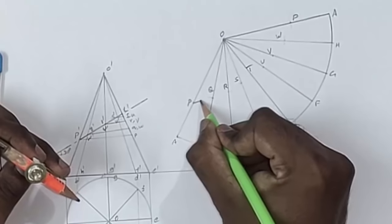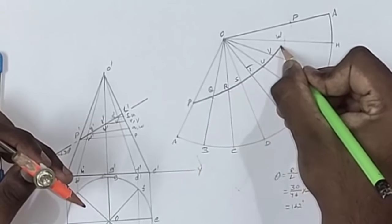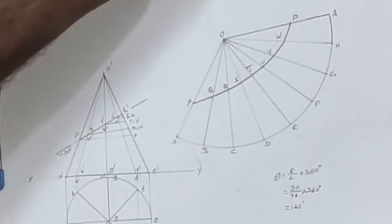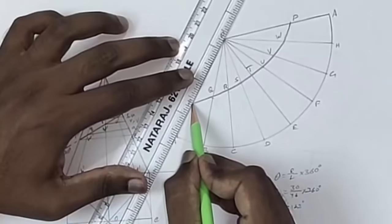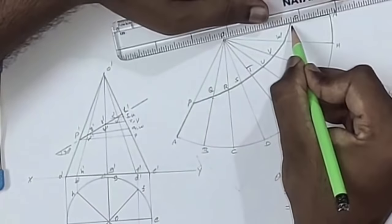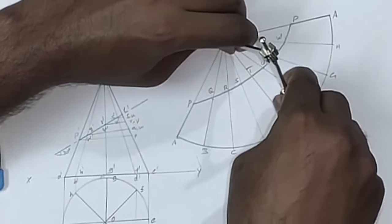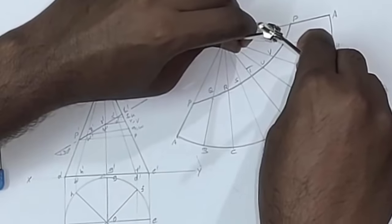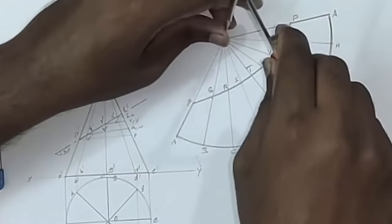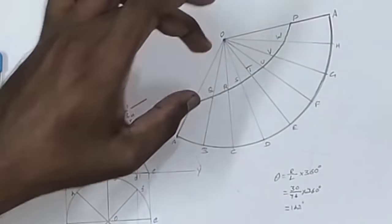Now connect all these points using a smooth curve and darken the portion below this section. Below the cut section, we have to darken the portion. This portion should be darkened and the rest should be left as a thin line.